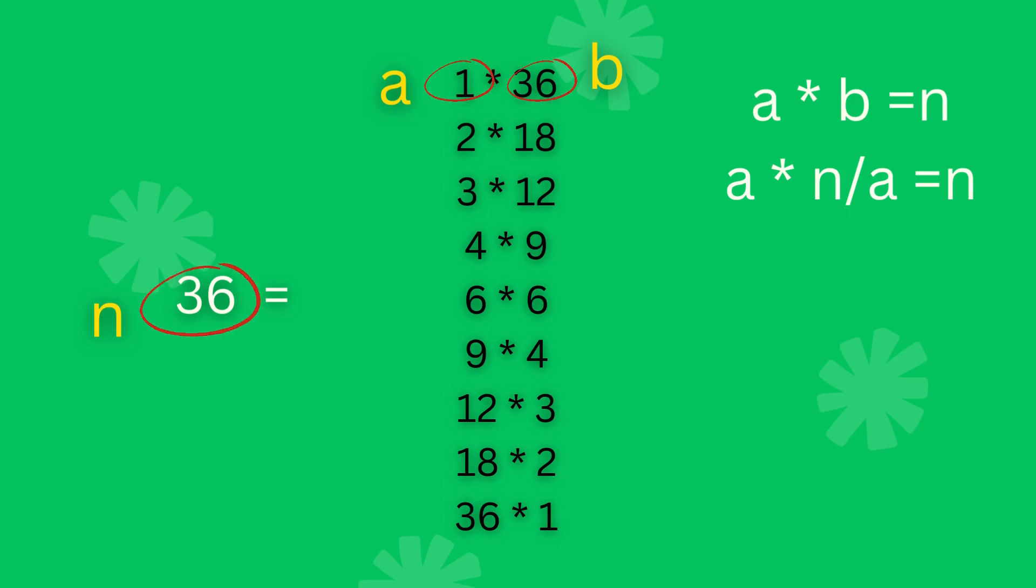I hope you understand, but what's the maximum value of a for which we are going to check? Also, one thing we can clearly see: these factors are duplicates. 9 cross 4 is duplicate of 4 cross 9, also 12 cross 3, 18 cross 2, and 36 cross 1. So no need to consider these duplicates.